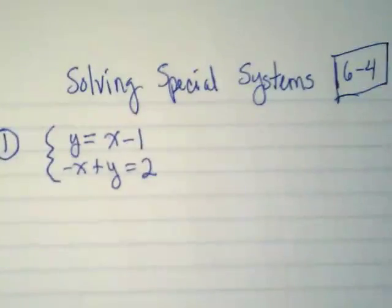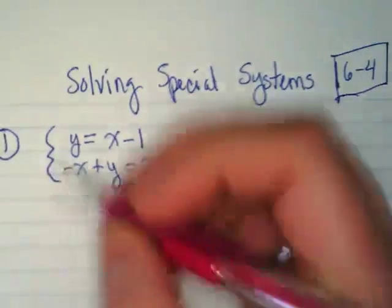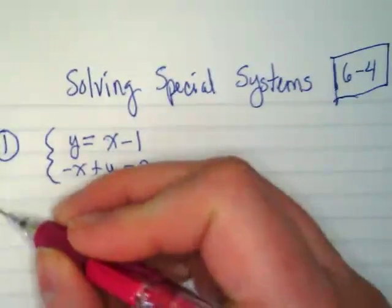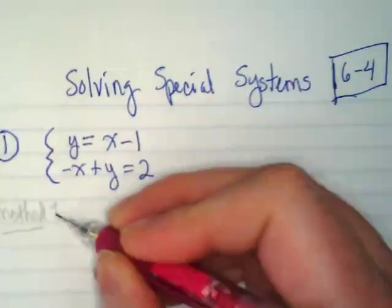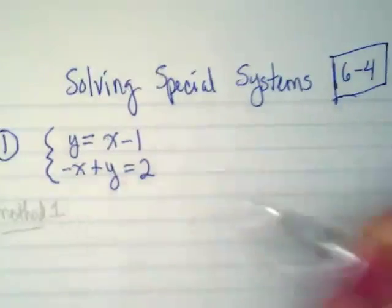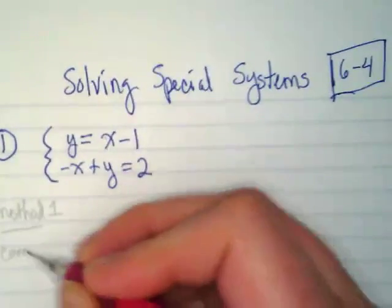In our book, they show two ways to do this, and neither one of them is the way I typically do it. Officially, method one for solving this kind of system is to compare the slopes and y-intercepts.